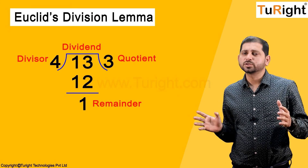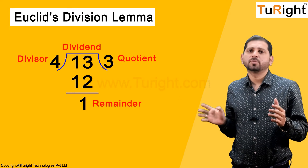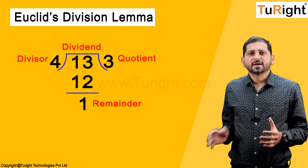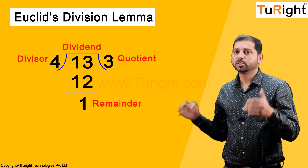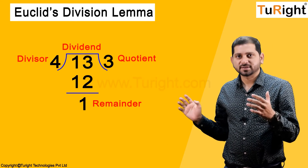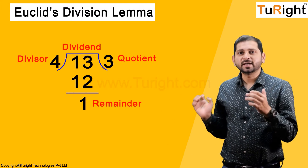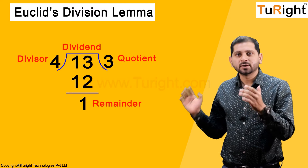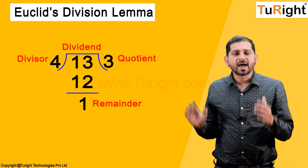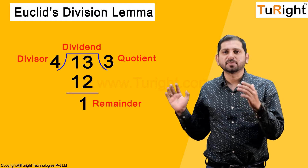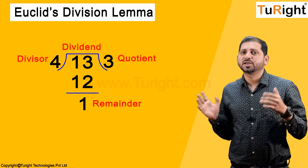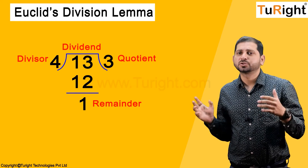We use the 4 times table such that the result doesn't exceed 13. Here, 4 is the divisor, 13 is the dividend, 3 is the quotient, and 1 is the remainder. This is how we generally perform division.